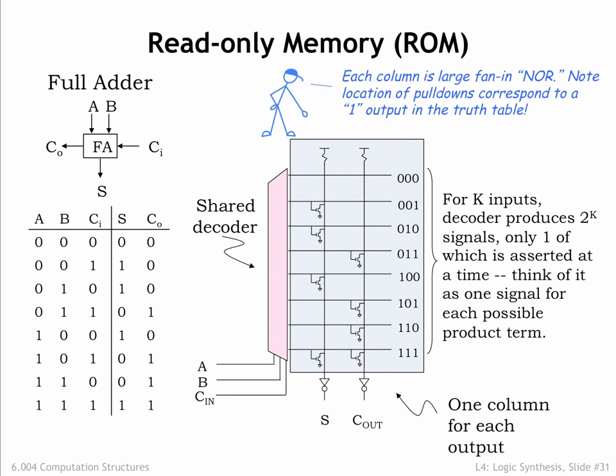The three inputs to the function, a, b, and ci, are connected to the select lines of a 3 to 8 decoder. The eight outputs of the decoder run horizontally in the schematic diagram, and each is labeled with the input values for which that output will be high.